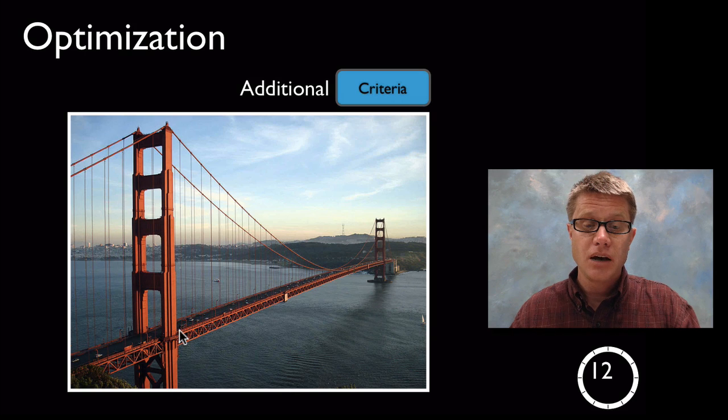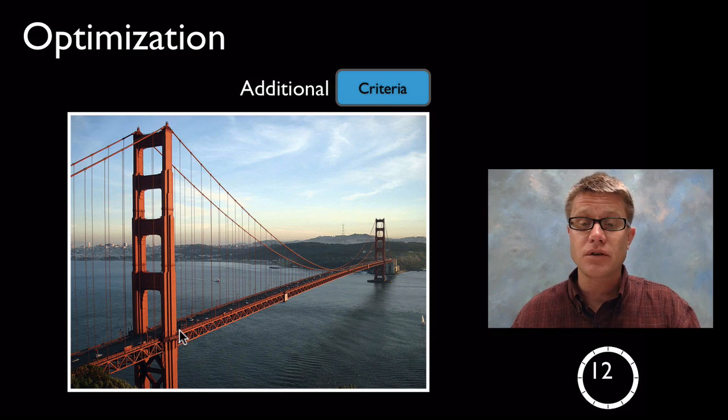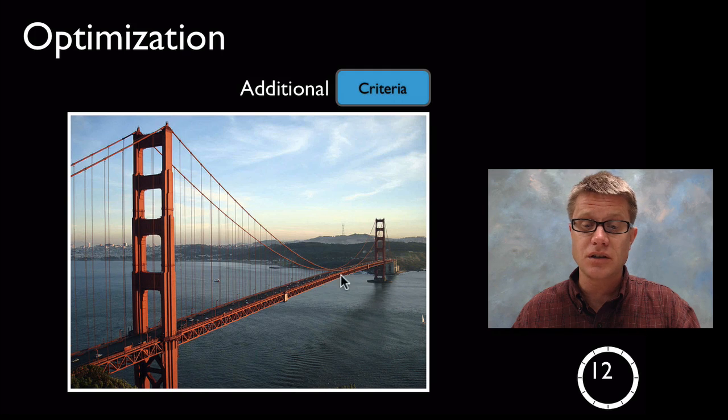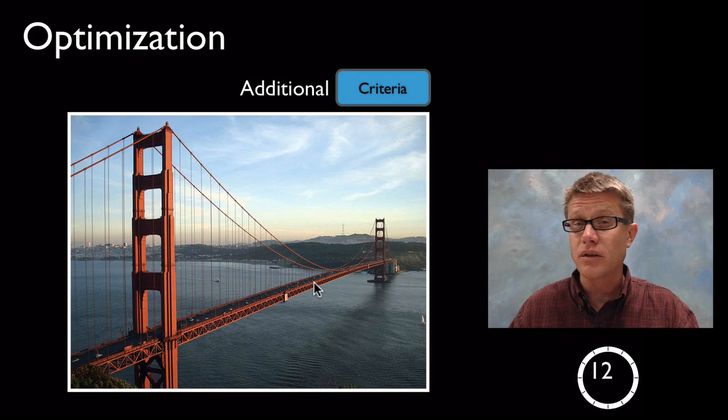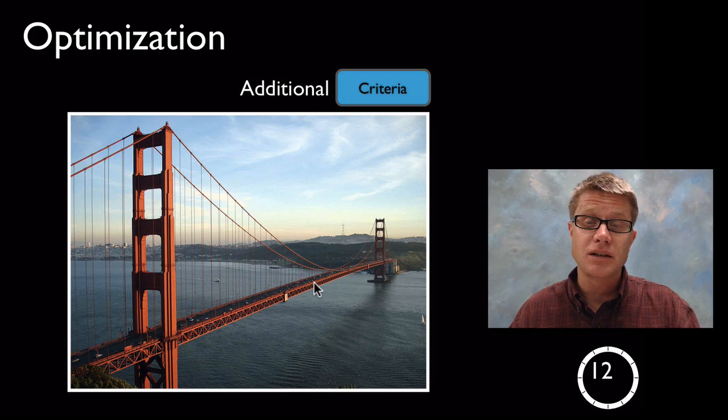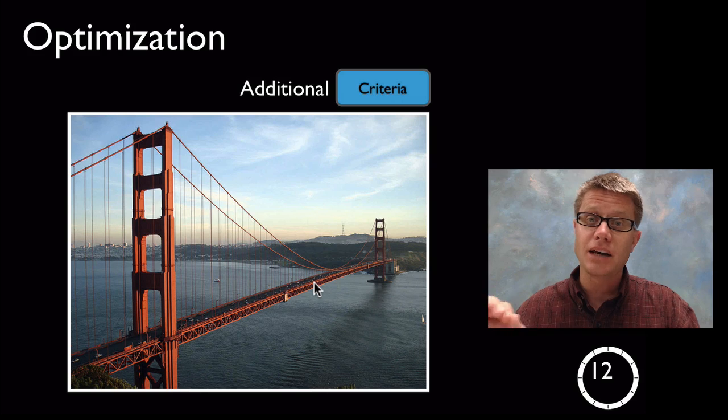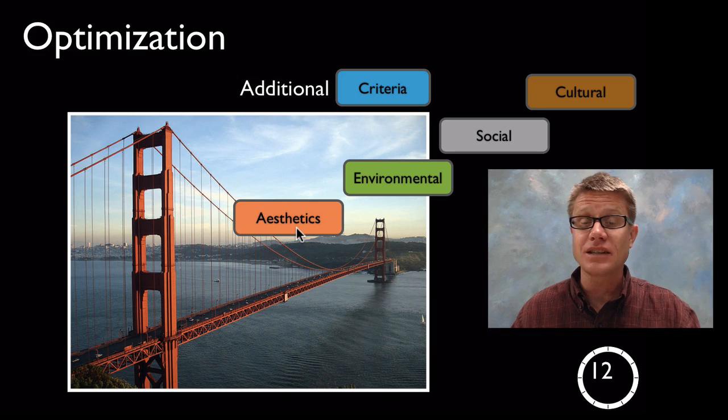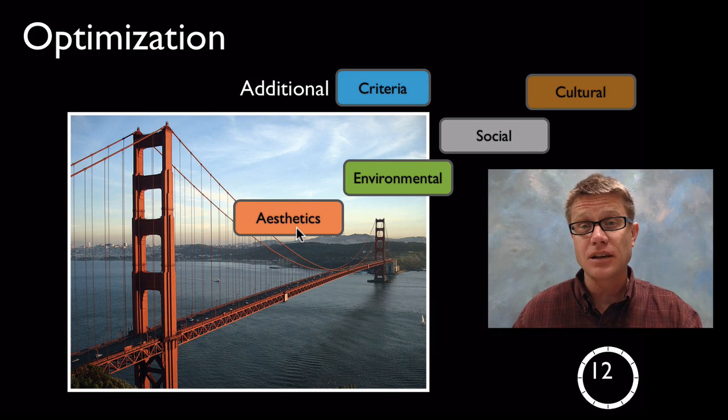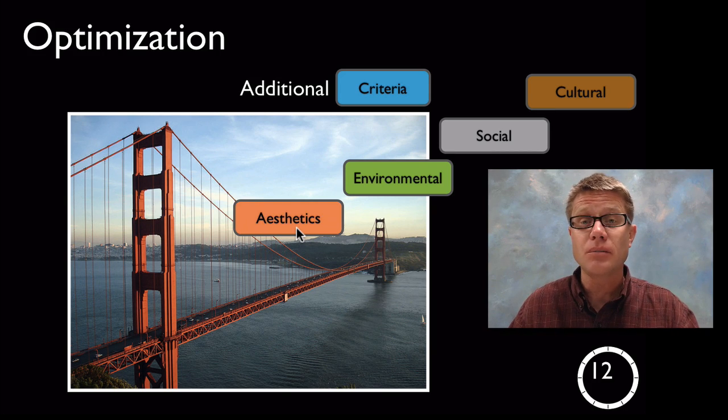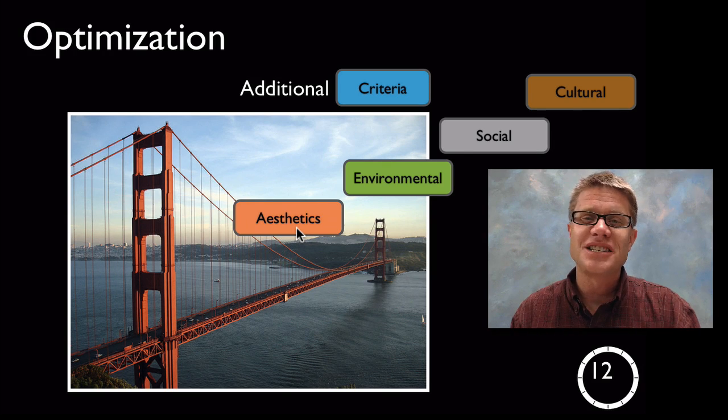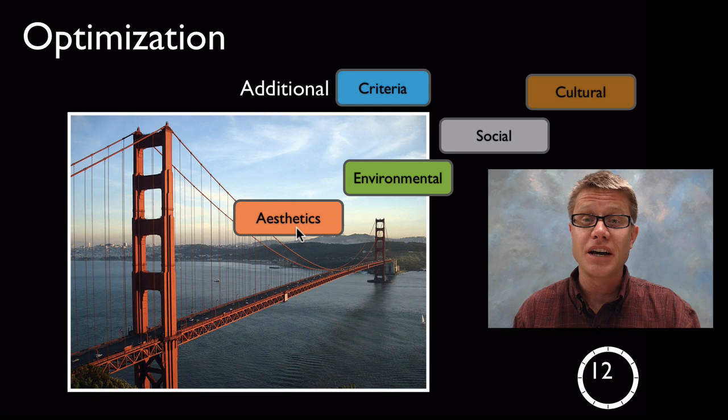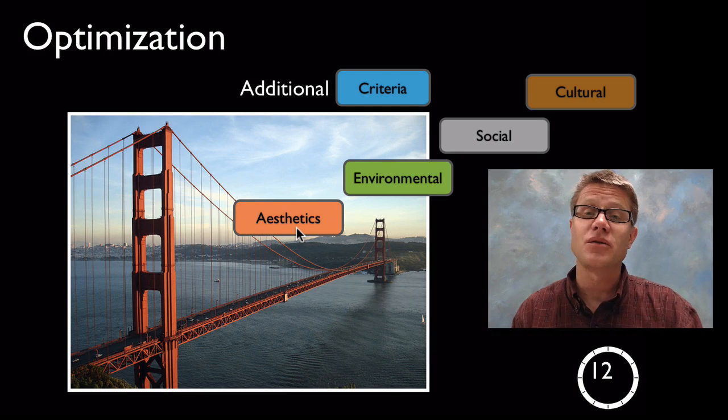This is the Golden Gate Bridge. When they were building it, they had to come up with a lot of different criteria. It had to span a certain distance and carry a certain number of cars over it, but fog is a big deal in San Francisco, so the color of the bridge was a big deal. The military wanted to paint it with black and yellow stripes, but thankfully they didn't listen to that. They balanced the aesthetics, its impacts on the environment, social impacts, even cultural impacts. The Golden Gate Bridge balances all these different criteria and was actually voted as one of the wonders of the modern world.